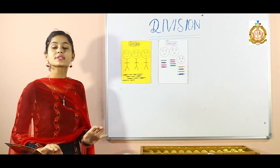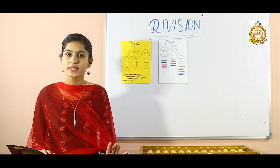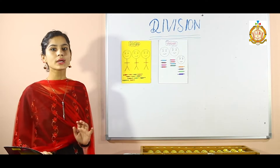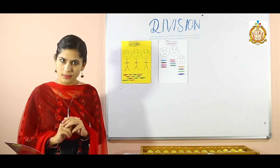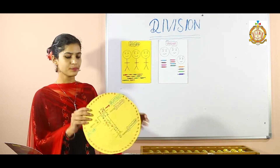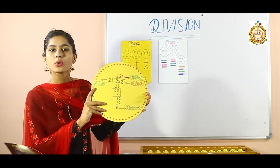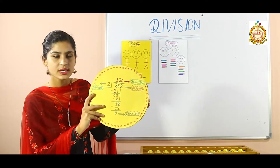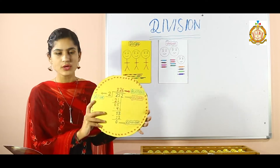Now, division consists of 4 parts. The first one is dividend. The second one is divisor. The third one is quotient. And the fourth one is remainder. Here is a division chart. I will tell you the different parts of division.